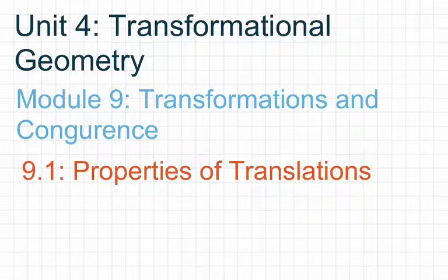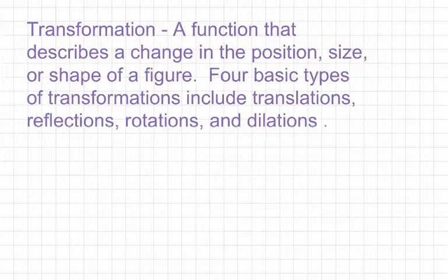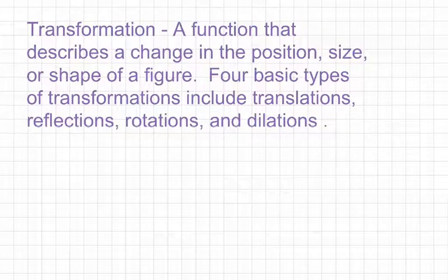Let's start off with some terminology, and then we'll get into applications of properties of translations. Our first term is what is called a transformation, and we're going to be spending all of Module 9 and Module 10 focusing on transformations. A transformation can be defined as a function that describes a change in the position, size, or shape of a figure. There's four basic types of transformations, which include translations, reflections, rotations, and dilations.